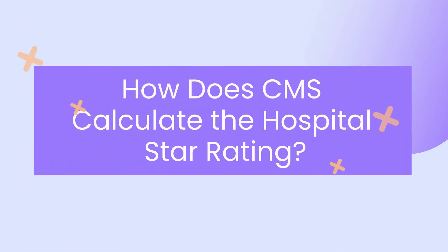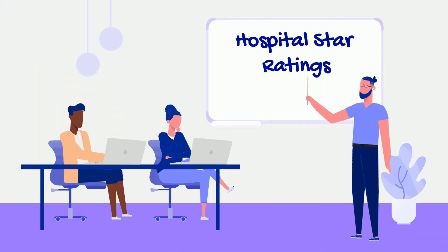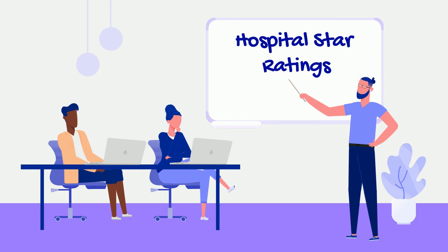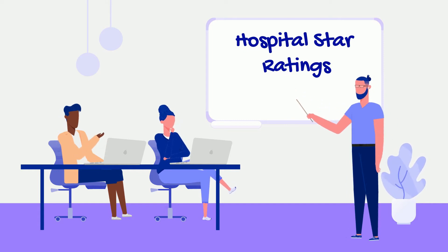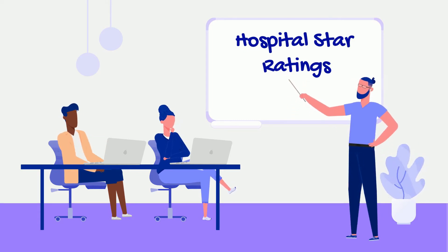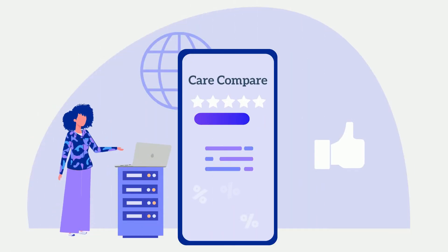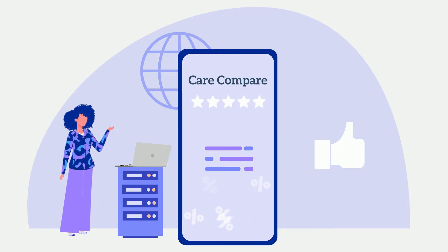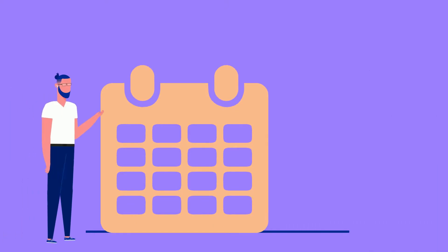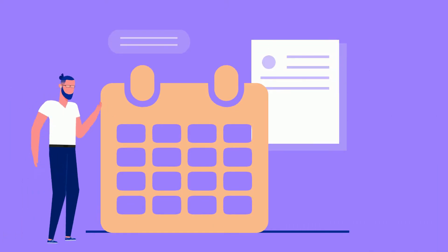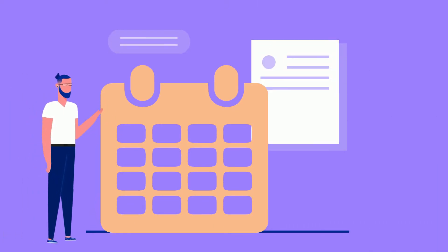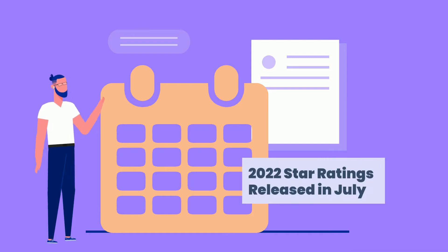CMS first released the hospital star ratings in 2017, an attempt to make it easier for patients to judge a hospital's quality of care. Much like a Google review, a patient visits Care Compare and sees a star rating ranging from one to five stars, with one being the worst and five being the best. Star ratings are usually updated once a year in coordination with one of the quarterly Care Compare measure releases, but CMS has never picked a consistent quarter to release the star ratings. In 2022, the star ratings are released with the July Care Compare refresh.